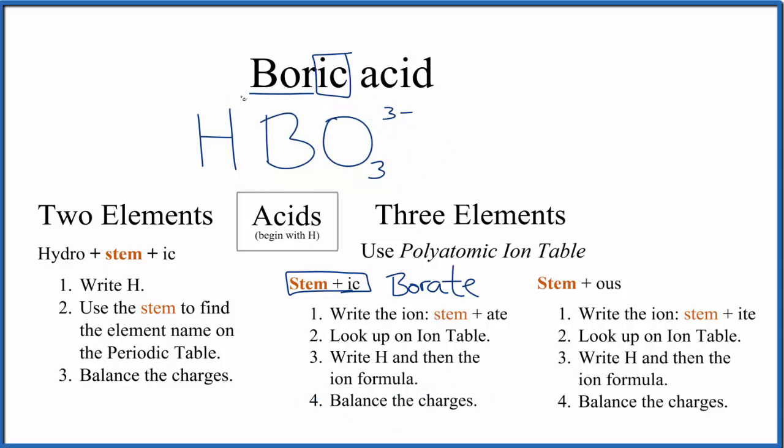Now we're going to balance the charges. We know that hydrogen is one plus - when we look on the periodic table it's in group one. For these charges to balance, we're going to need three times one plus to balance out the three minus. That makes the formula for boric acid H3BO3.